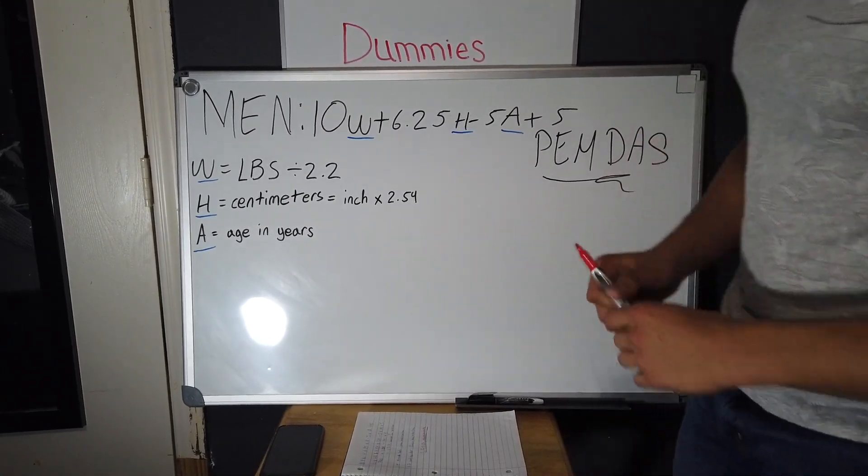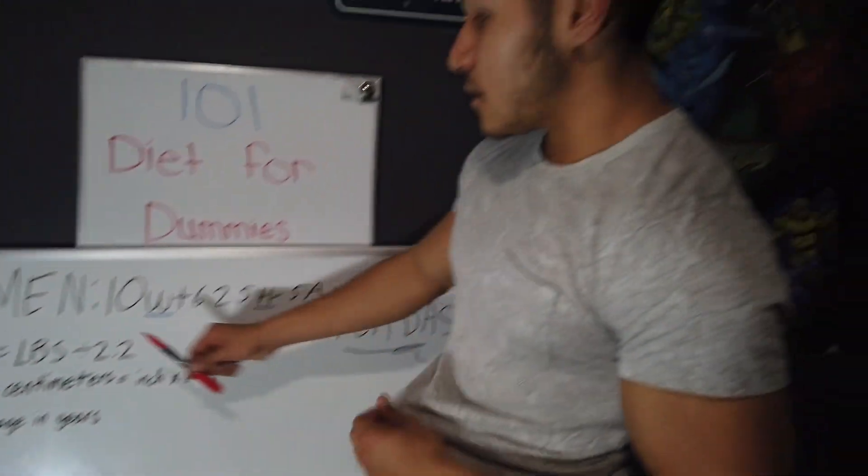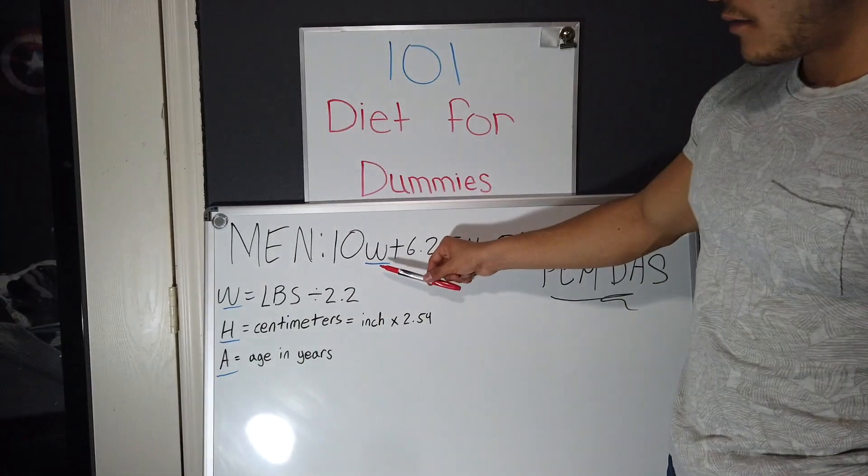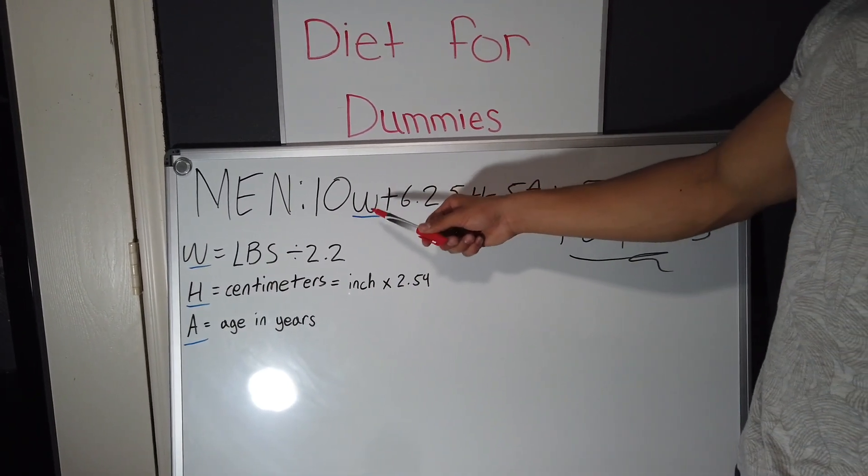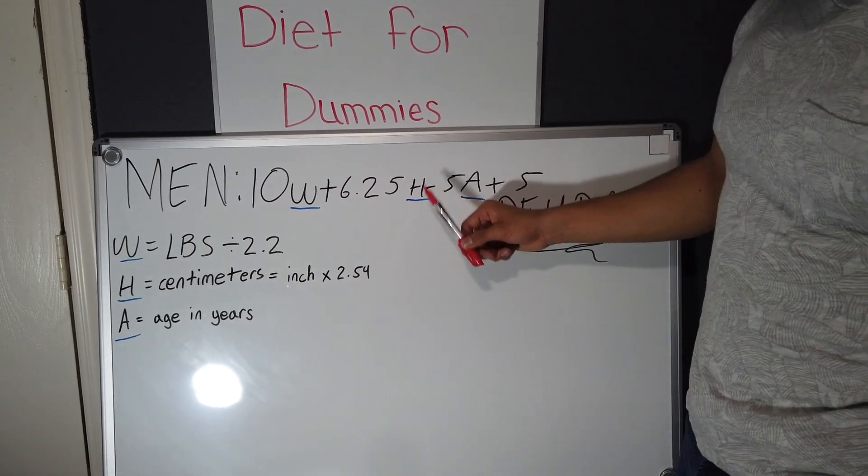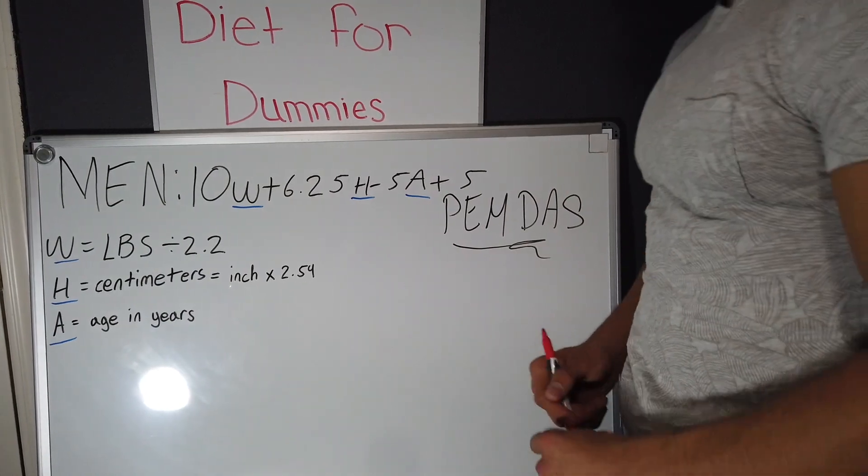So I'm gonna go ahead and break it down for y'all. The equation is 10 times your weight and you have to convert your weight into kilograms. Then once you get your weight in kilograms, then you have to convert your height into centimeters and then you use your age.